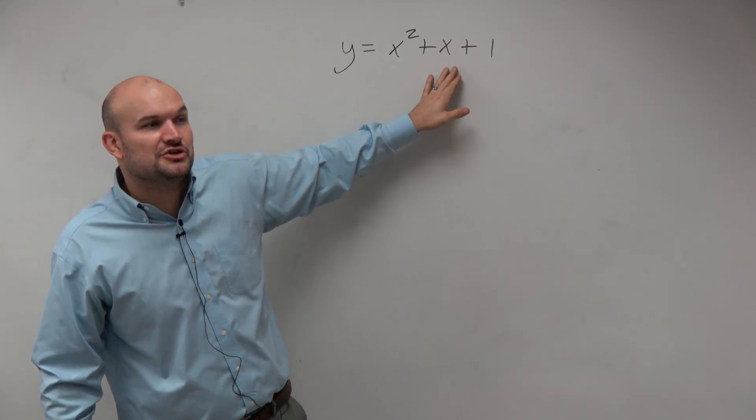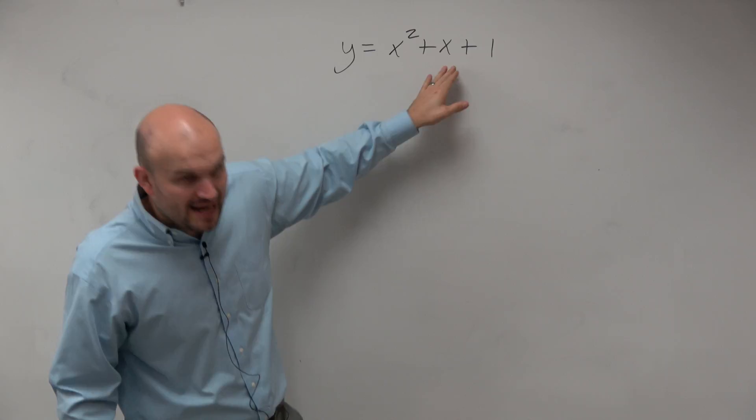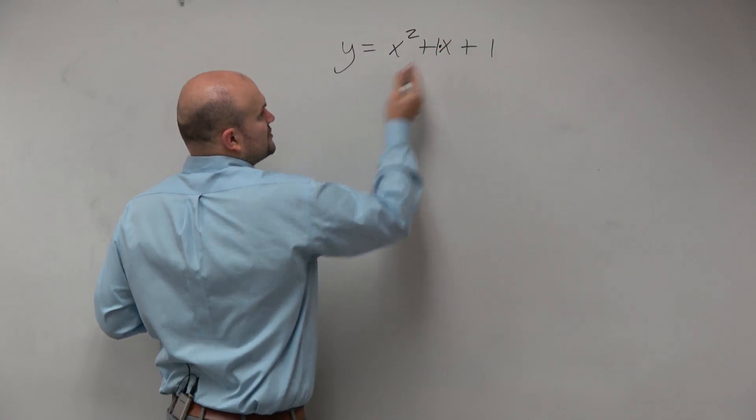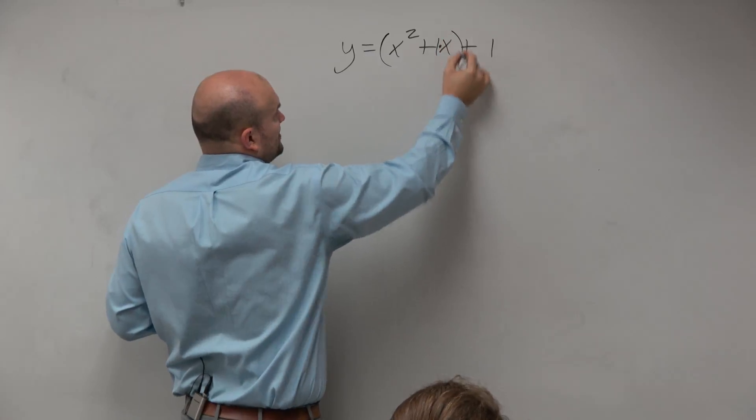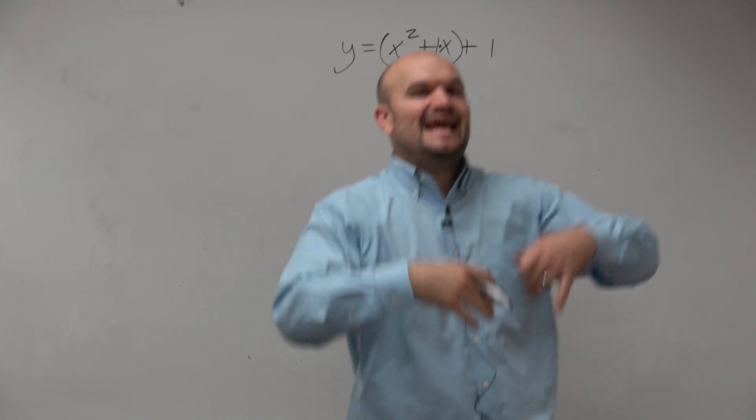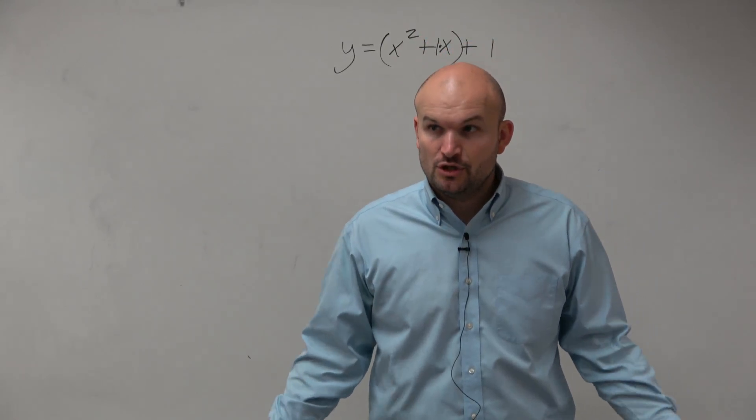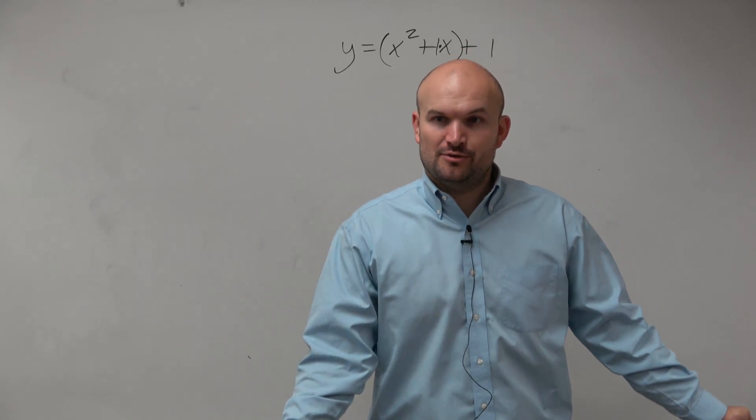So that means we need to create a perfect square trinomial. Remember, that has a coefficient of 1. That becomes important. So what we're going to do is first thing is going to group the first two terms. And we need to create now a perfect square trinomial.